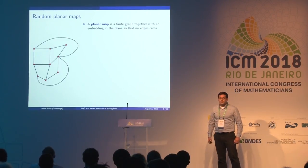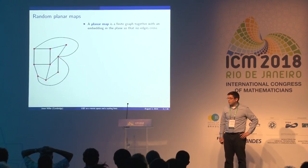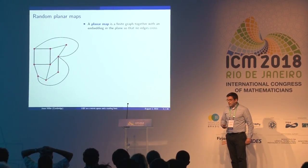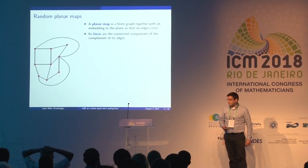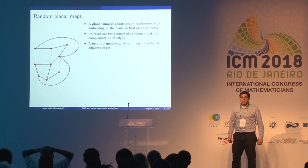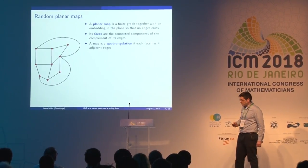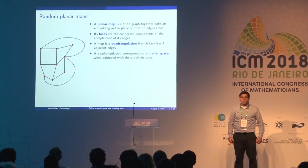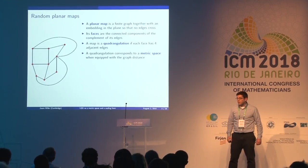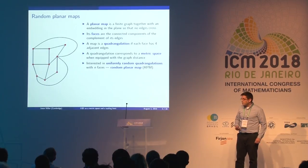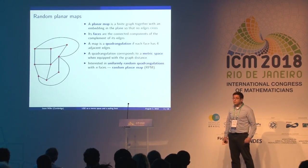A planar map is just a graph together with an embedding in the plane so that no two edges cross. The faces of a planar map are the connected components of the complement of its edges. One particularly nice example is a quadrangulation, where each face has exactly four adjacent edges. We think of a quadrangulation as a metric space where distance comes from the underlying graph distance.